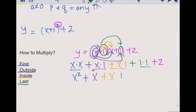X times one will give us x. One times one gives us one, and we bring down our two. Now we combine like terms. We see these two are like terms, and these two are like terms. We rewrite our final equation then as y equals x squared plus 2x plus 3.